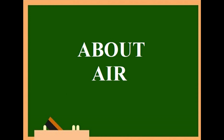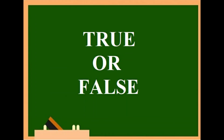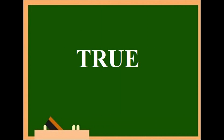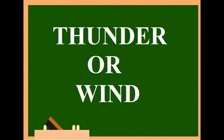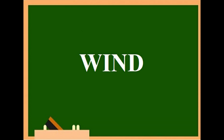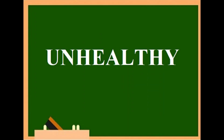First: we cannot see air, but air is everywhere — true or false? It is true. Second: clean air is colorless — true or false? Yes, again it is true. Third: moving air is called thunder or wind? It is called wind. Fourth: dirty air is healthy or unhealthy? It is unhealthy.